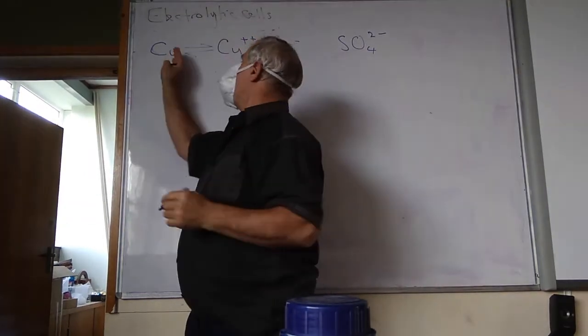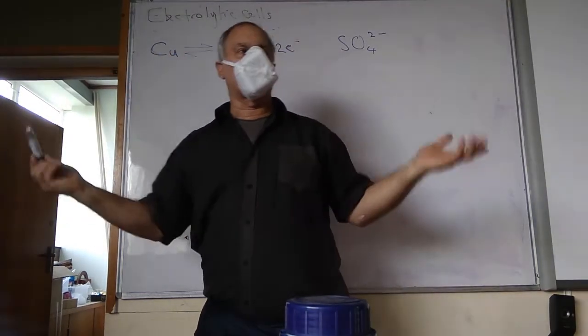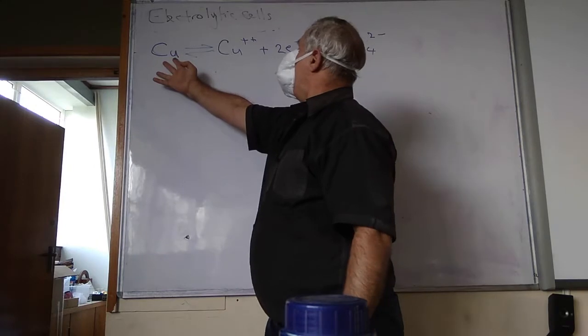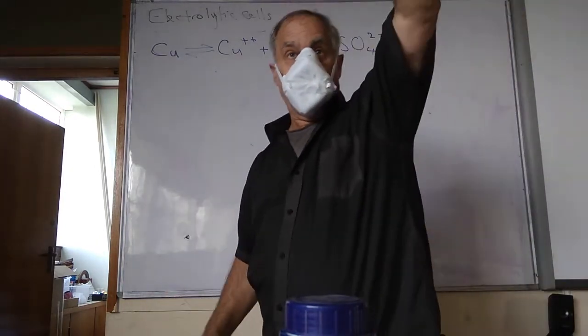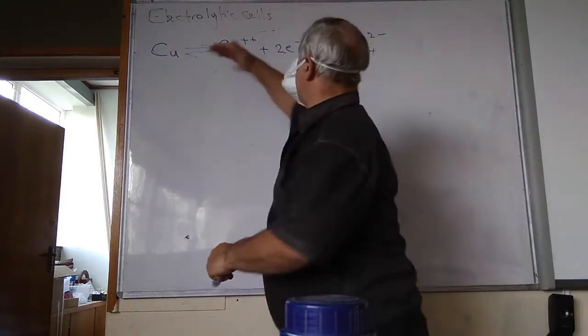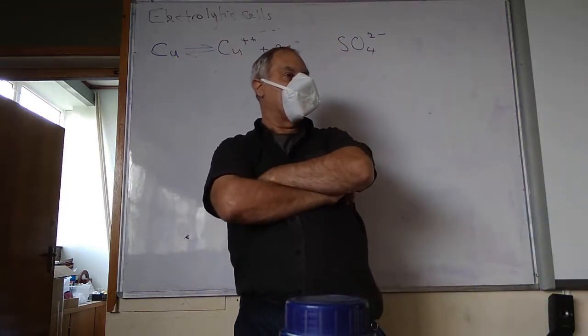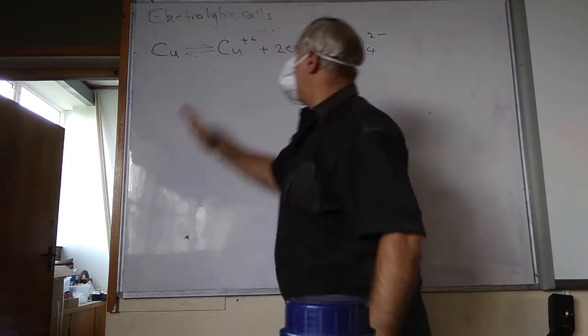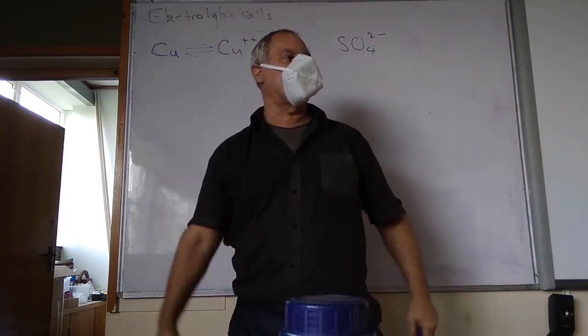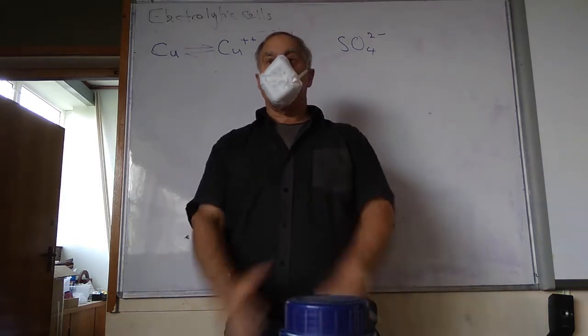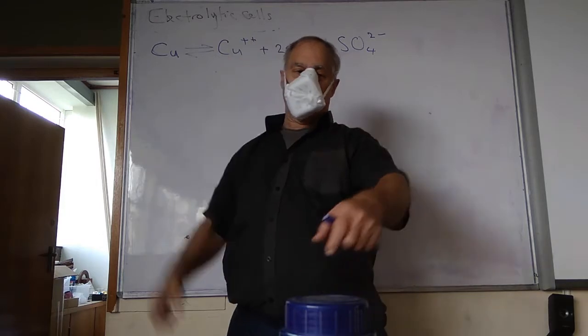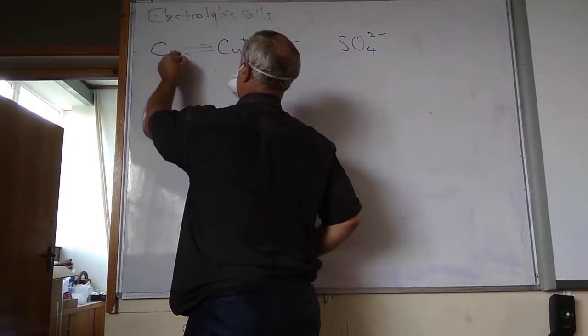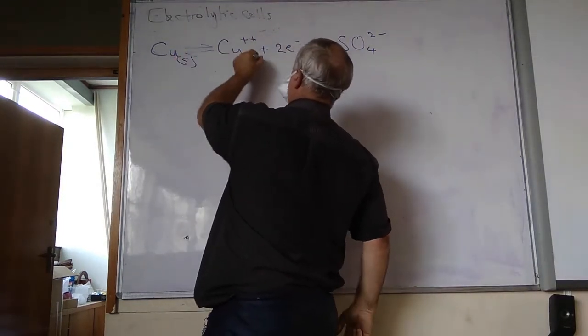So we take copper sulfate and we dissolve it, and now we've got an equilibrium situation where copper metal is in equilibrium with its ions. So now you may remember Le Chatelier's principle. If something's in equilibrium, how can we get the equilibrium to shift to the left or the right?